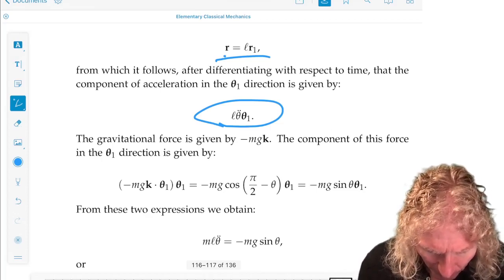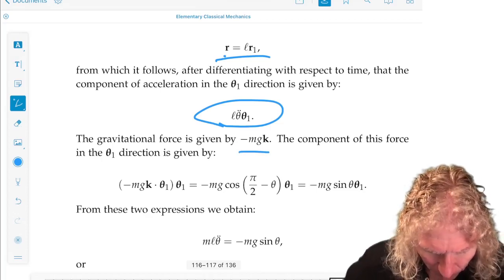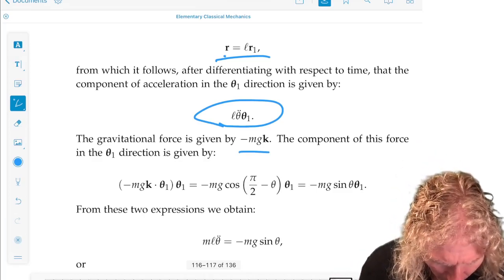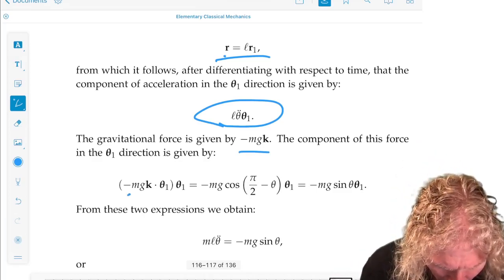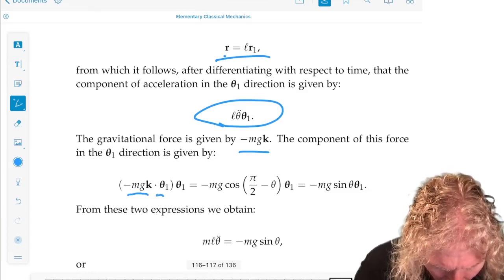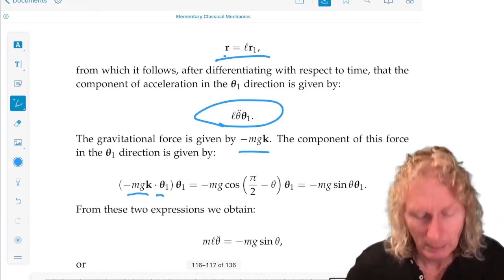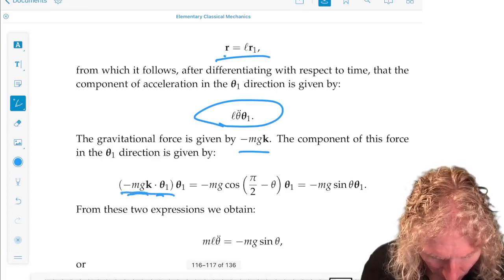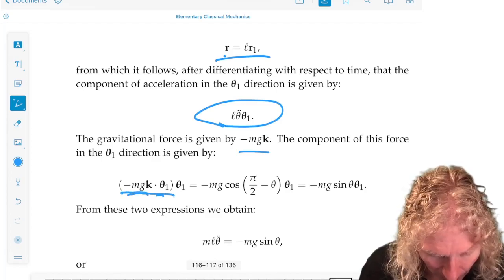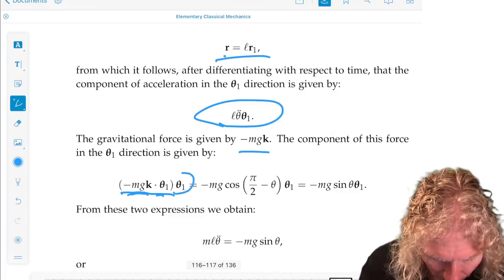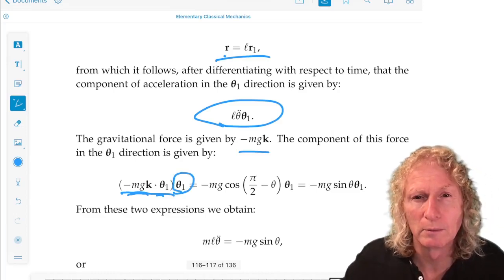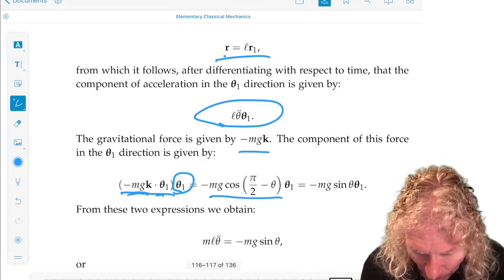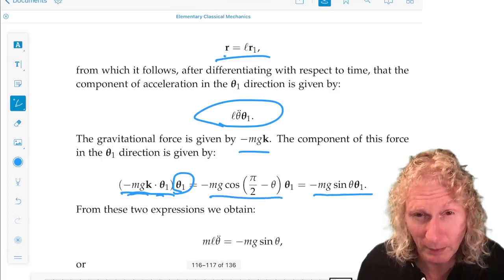Gravity acts only in the vertical direction, so what we need is the component of gravity in the theta 1 direction, and that's minus mgk dot theta 1 multiplied by the unit vector theta 1. You can do a little bit of trigonometry and you'll see that it's given by this expression.